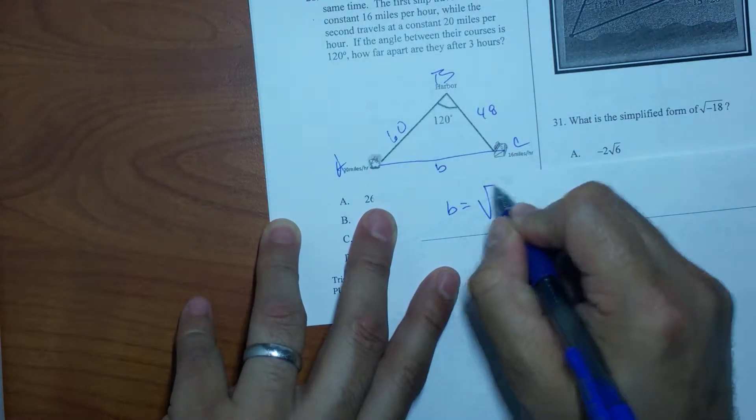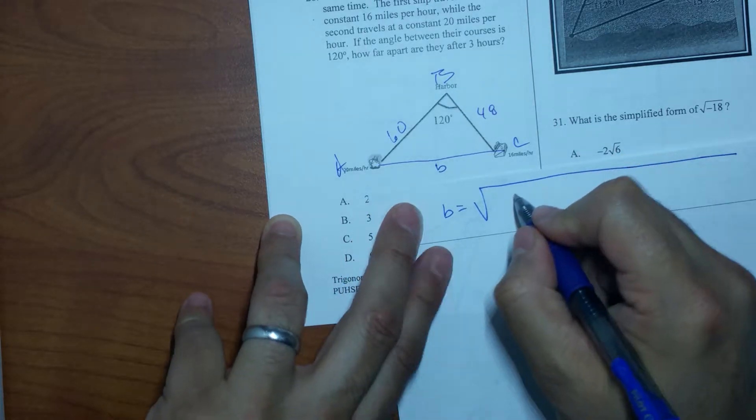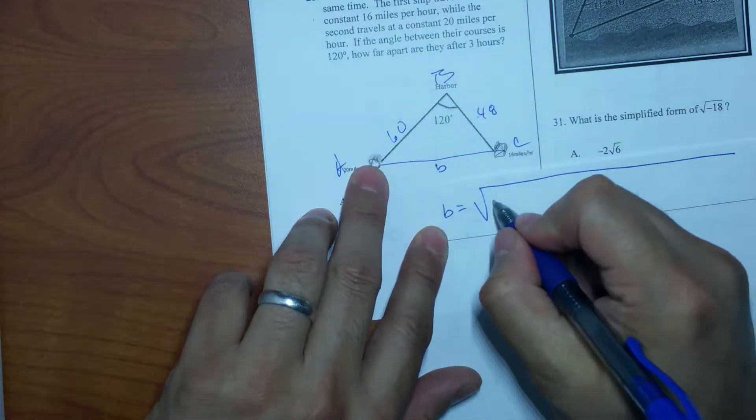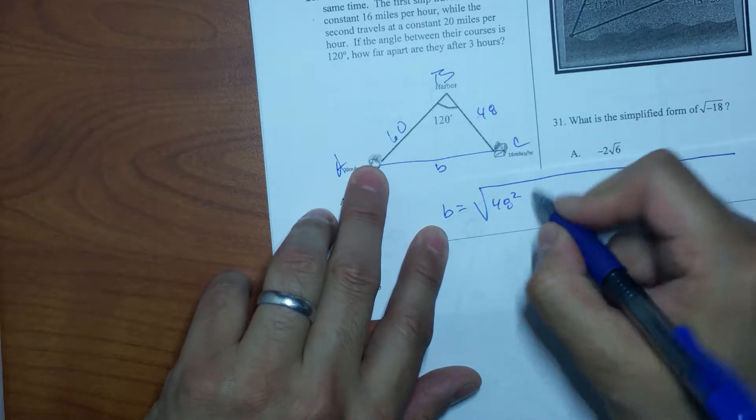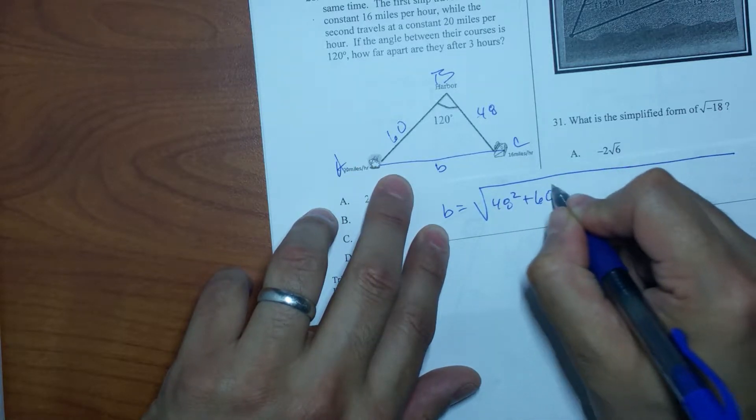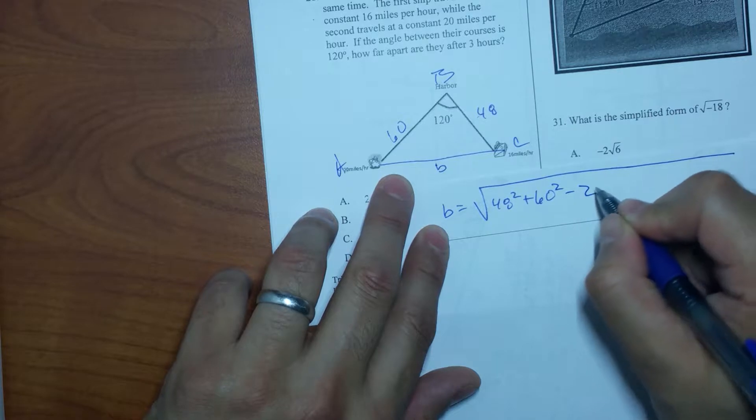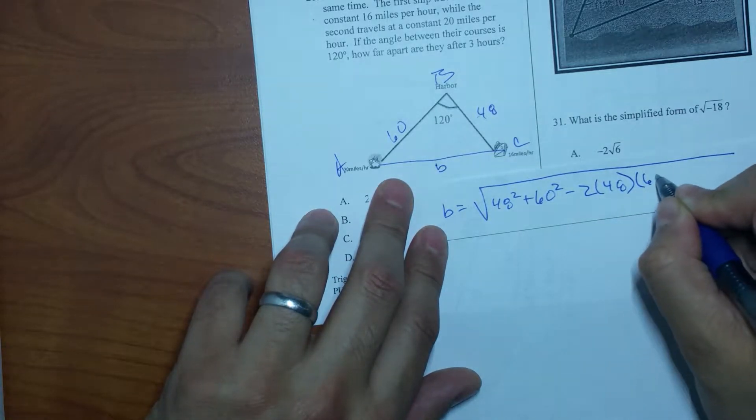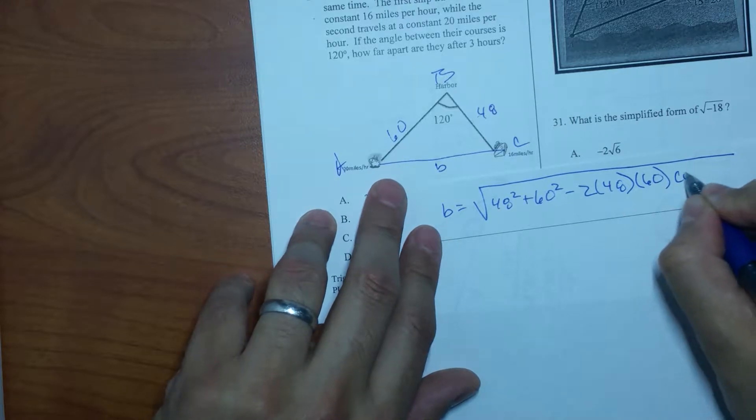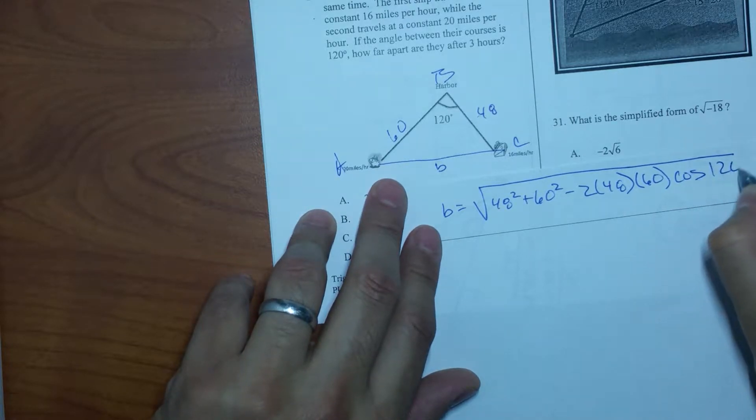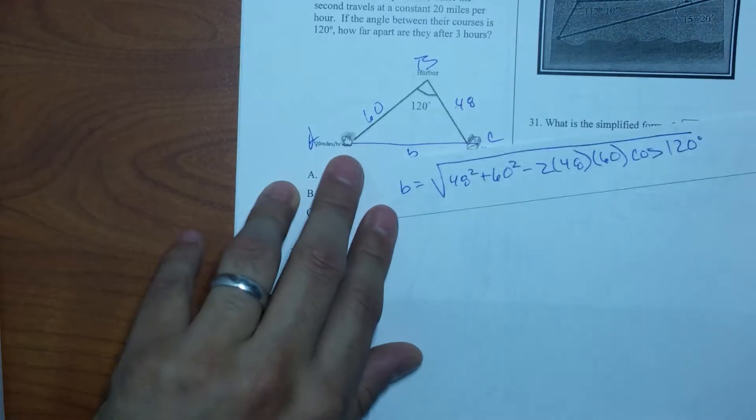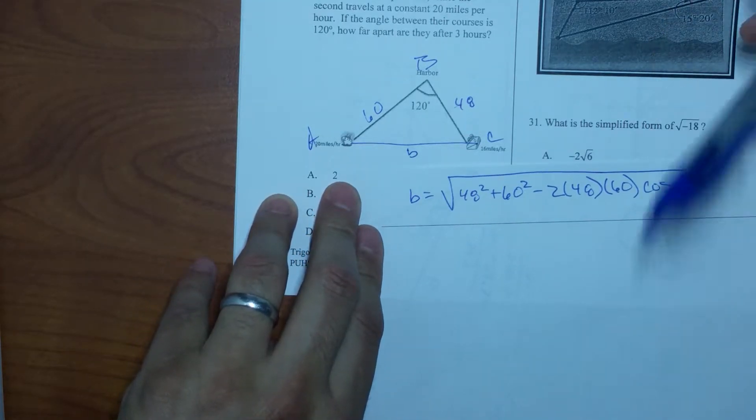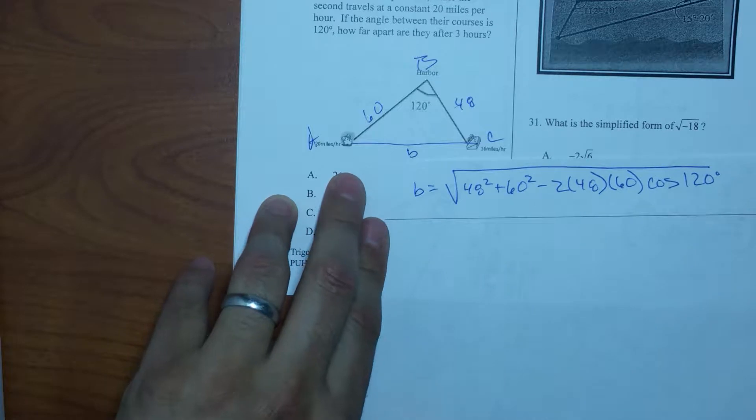You'll get the same answer if you label it. So I'm going to say that B is equal to the square root of, that's going to be, let me see, A squared, so it's 48 squared plus 60 squared minus 2 times 48 times 60 times cosine of 120 degrees. Now did I lose anyone there?